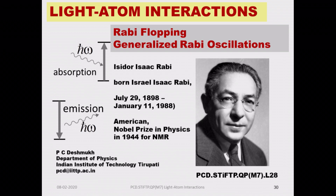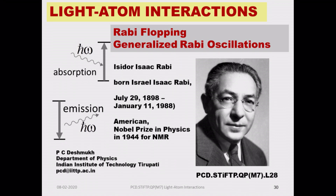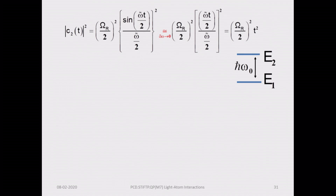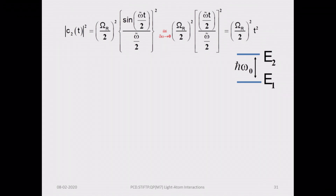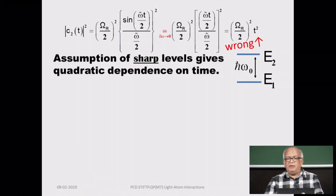This field is a subset of quantum theory, a subset of atomic physics, but it is so specialized that many people consider it an independent field — quantum optics or photonics. We were concerned in the previous class that the probability of transition from a ground state to an excited state, derived from sharp levels E1 and E2, gave us a quadratic dependence on time.